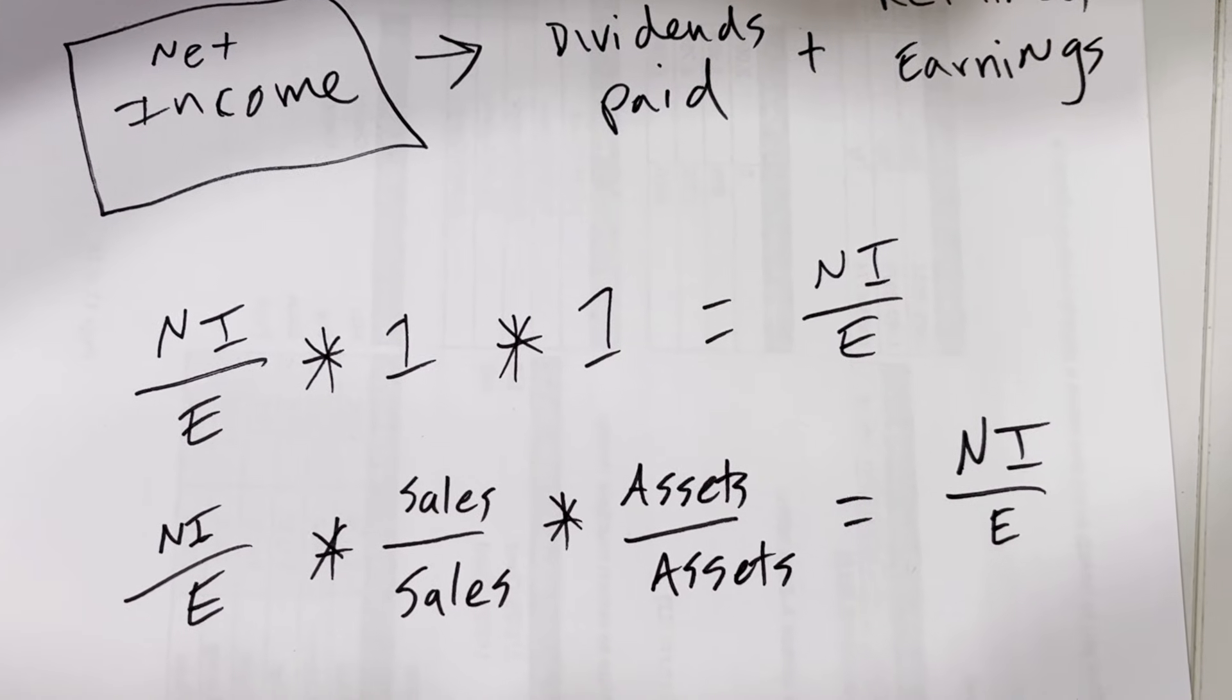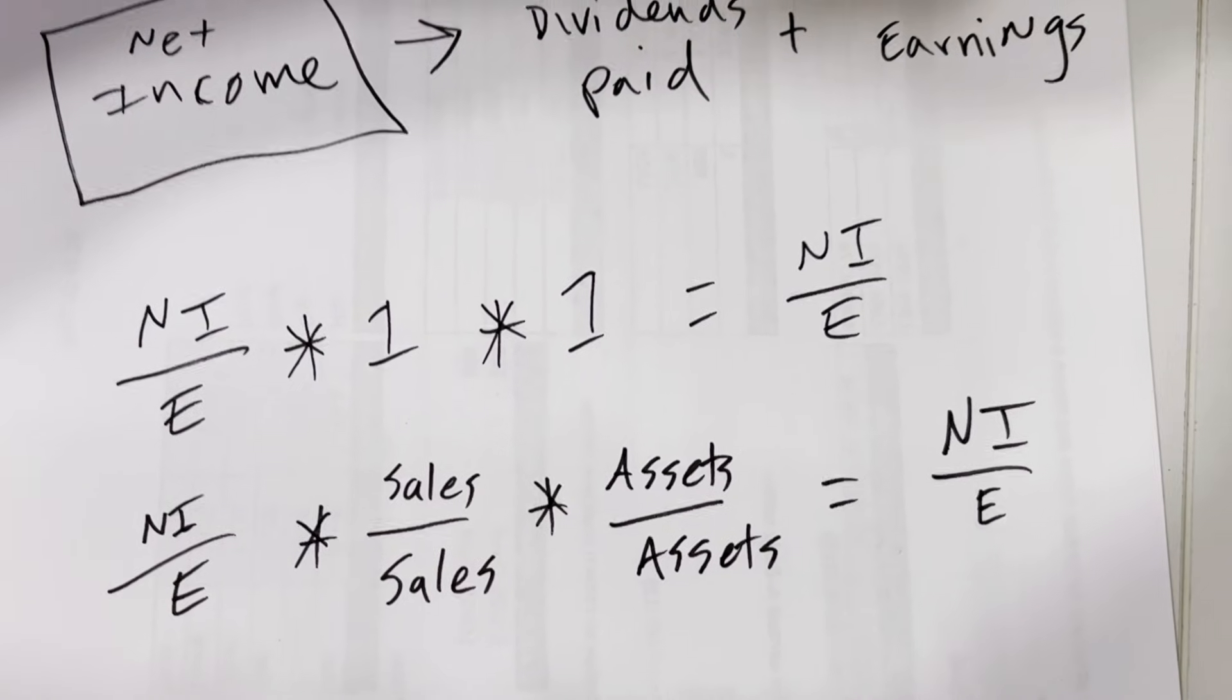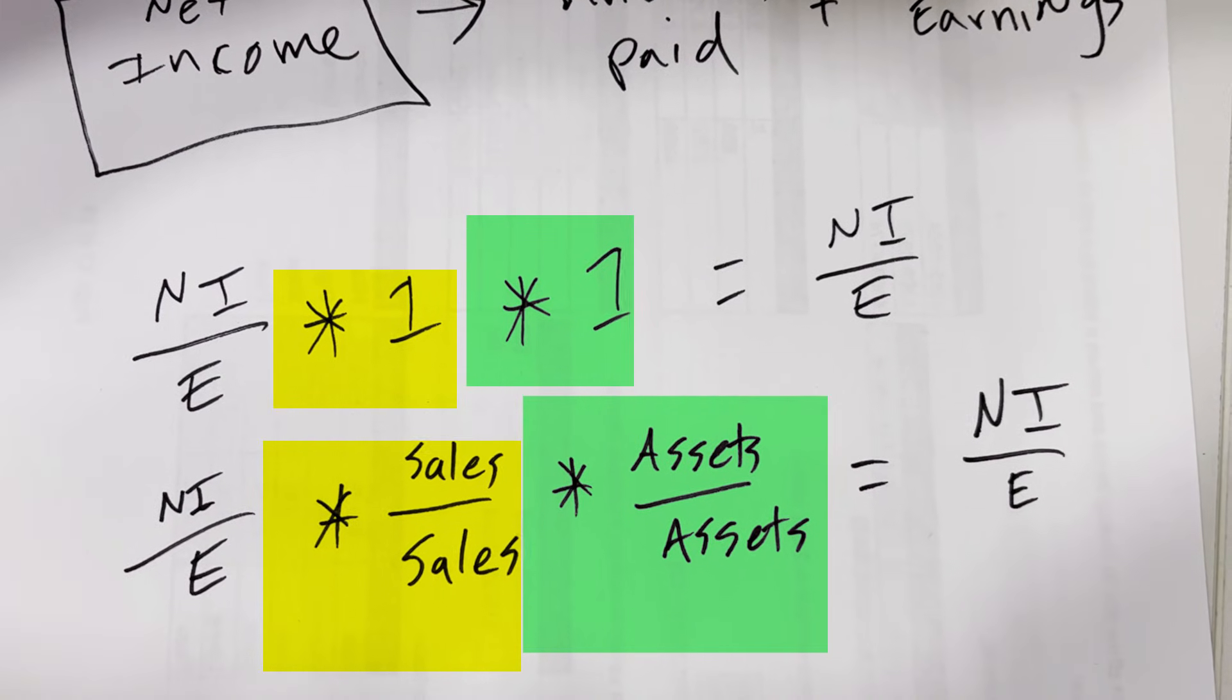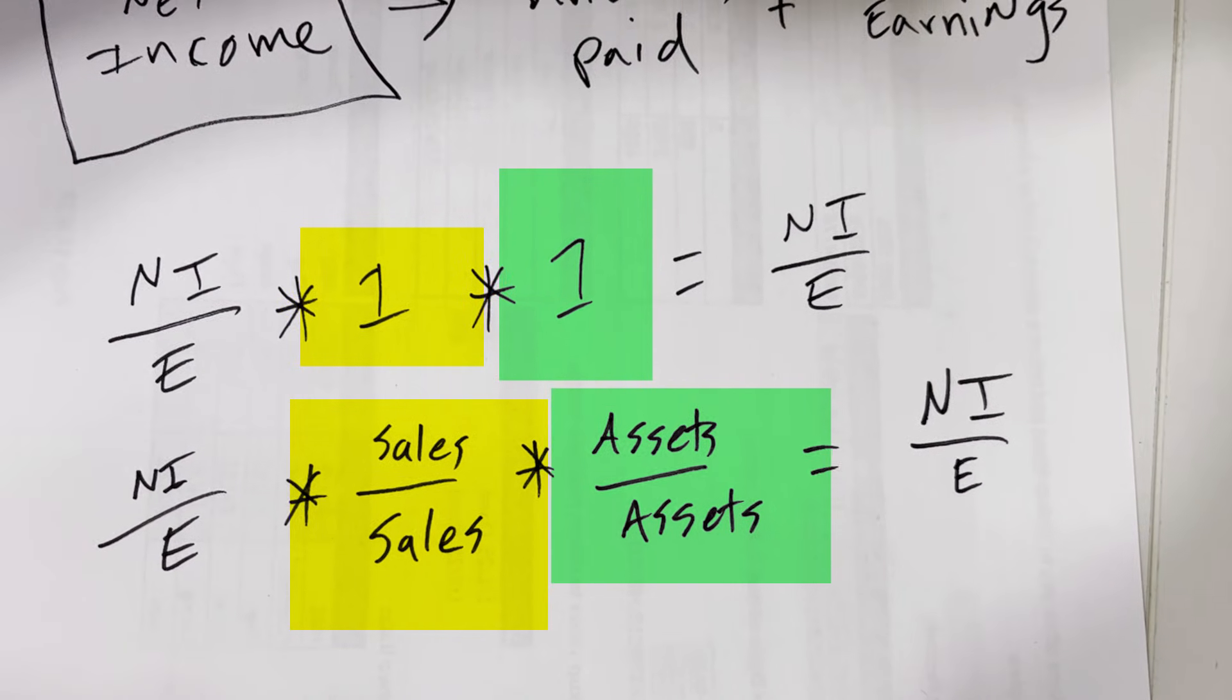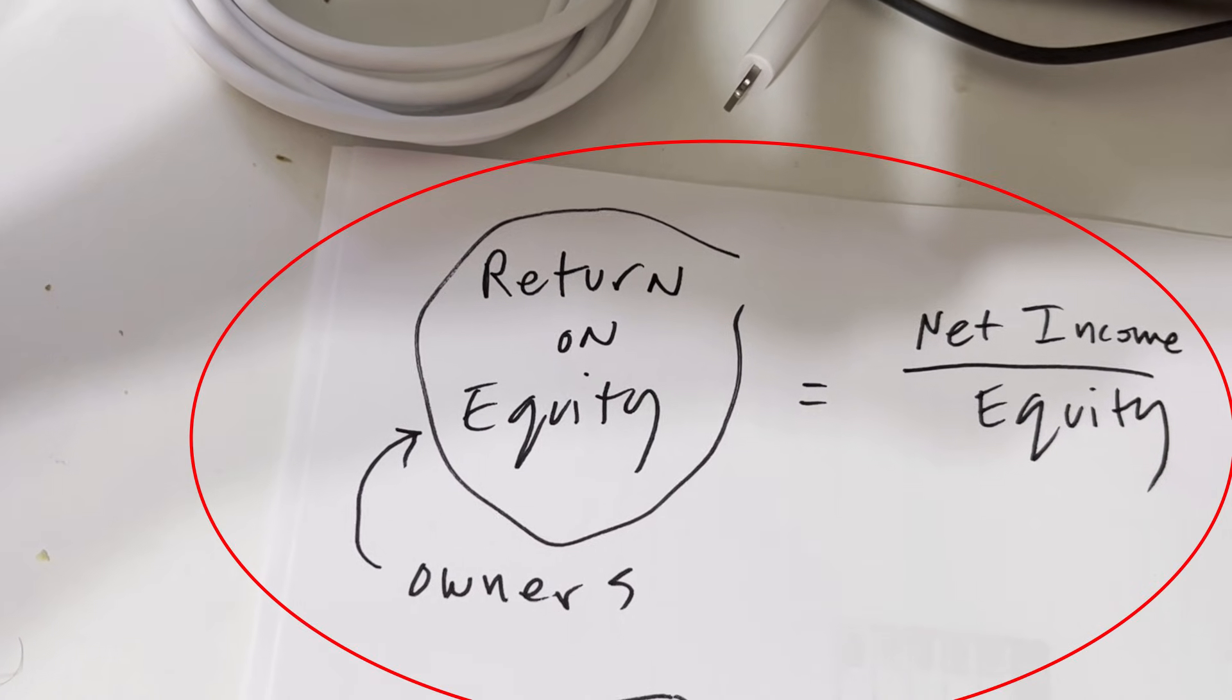Well, what if you're an analyst and you're smart, you choose the type of number one you want: sales over sales and assets over assets. It still equals net income over equity, which of course is return on equity.